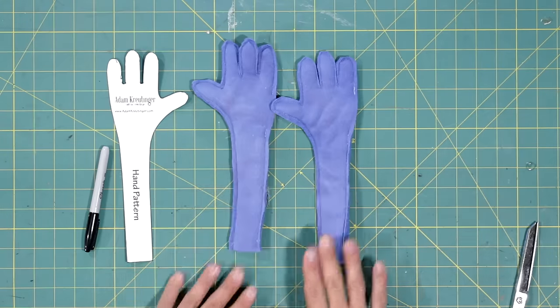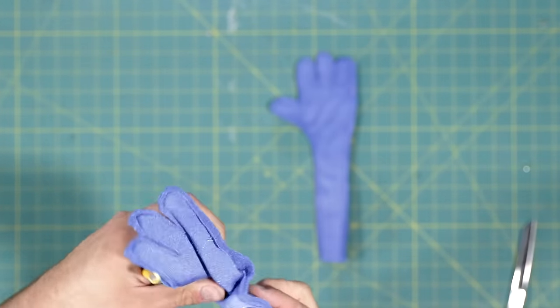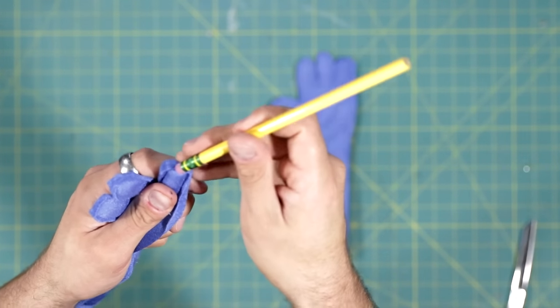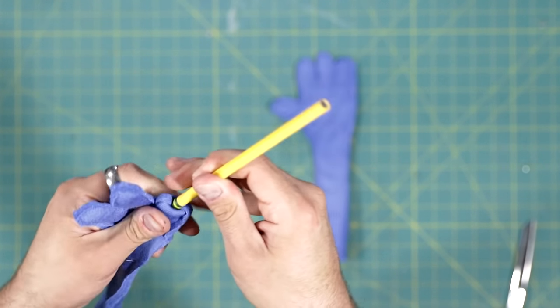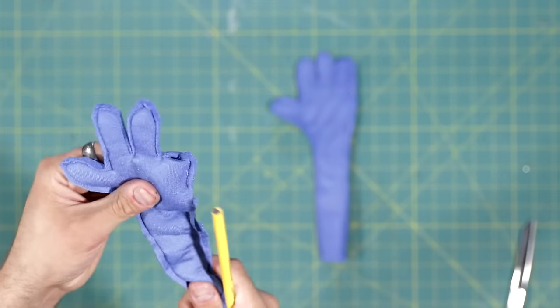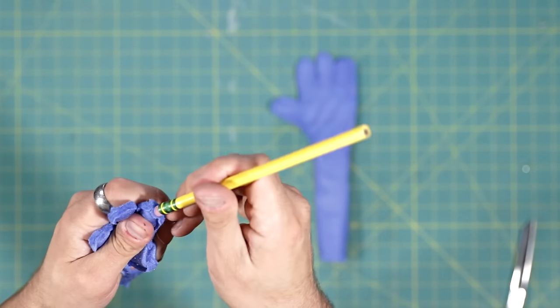Now we have to turn these hands inside out. An easy way is by using two pencils. I put one up through the bottom of the arm, then the other to push the fingers down inside the hand. That makes it easier to turn the whole arm.